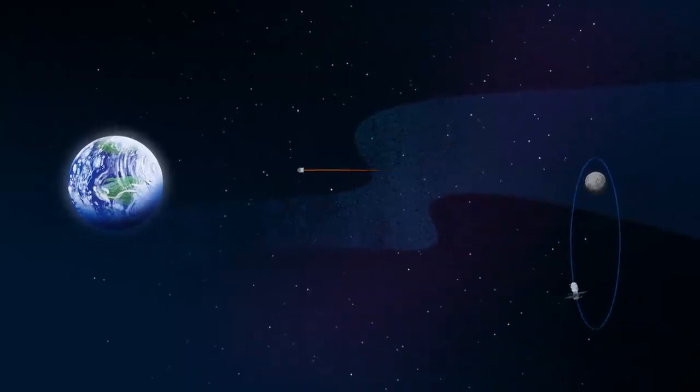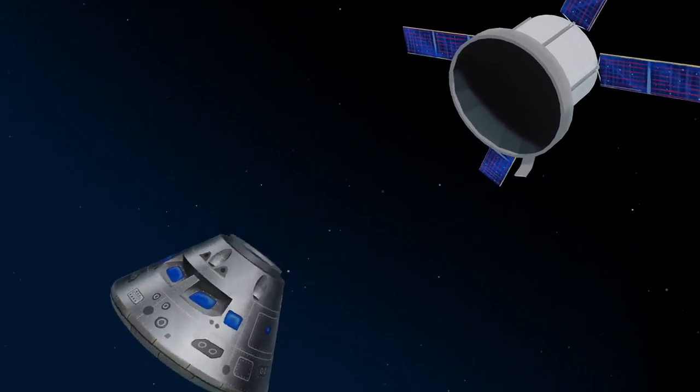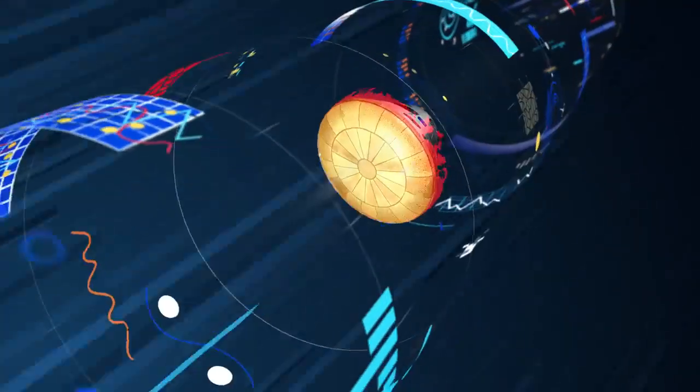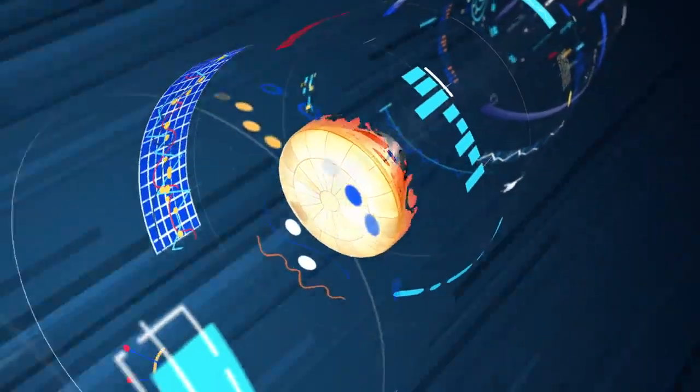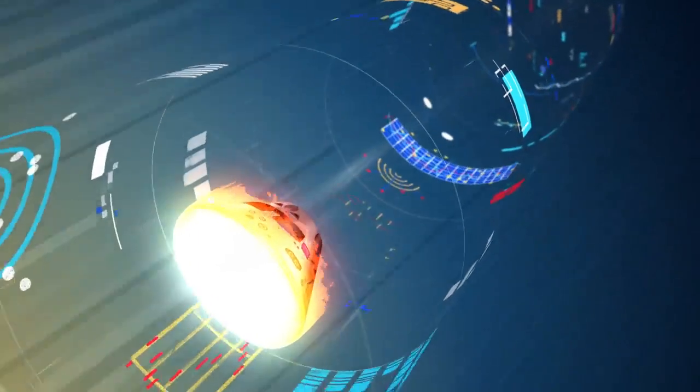As they near the end of this journey, the service module is released, and the crew module is oriented heat shield first. Entering Earth's atmosphere at 25,000 miles per hour, the friction of air slows Orion considerably, while also subjecting it to temperatures of 5,000 degrees.